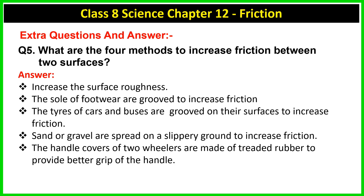Question 5: What are the four methods to increase friction between two surfaces? First, increase the surface roughness — rough surfaces provide more friction than smooth surfaces. Second, the soles of footwear are grooved to increase friction. Third, tires of cars and buses are grooved on their surfaces to increase friction. Fourth, sand or gravel are spread on slippery ground to increase friction. Also, handle covers of two-wheelers are made of threaded rubber to provide better grip.